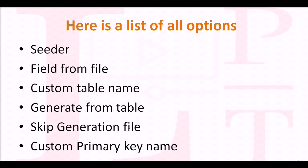Here is a list of all options. Today we are going to learn 6 options with scaffold. First one is seeder, second one is fields from file, custom table name, generate from table, skip generation file, and custom primary key name.